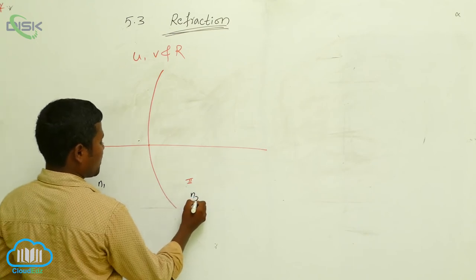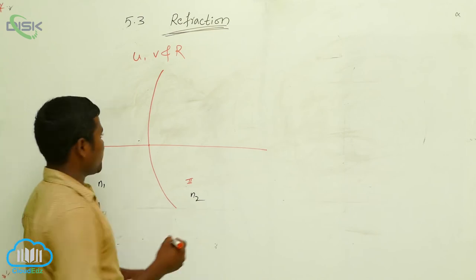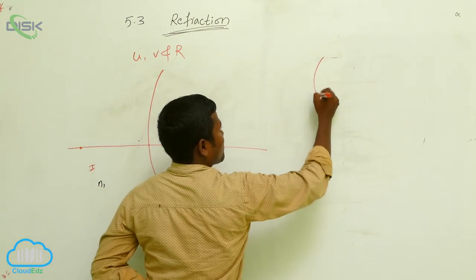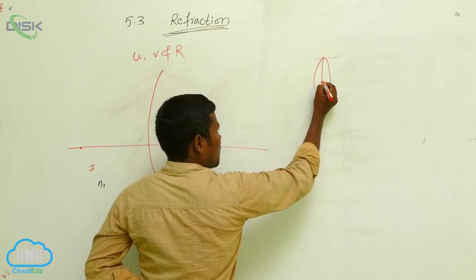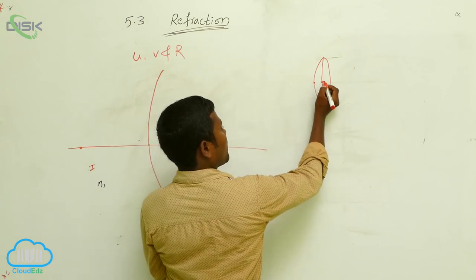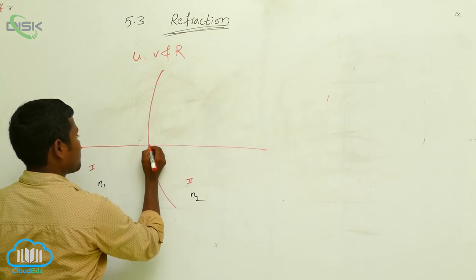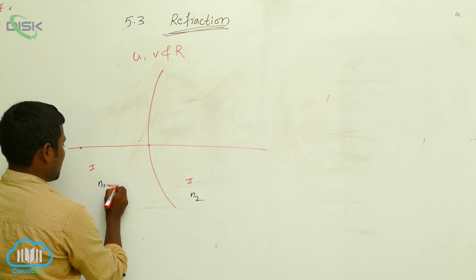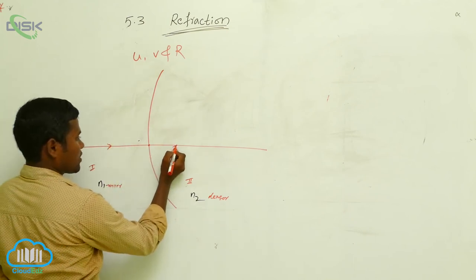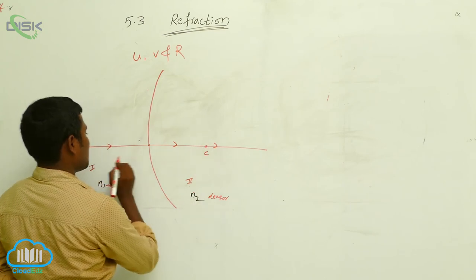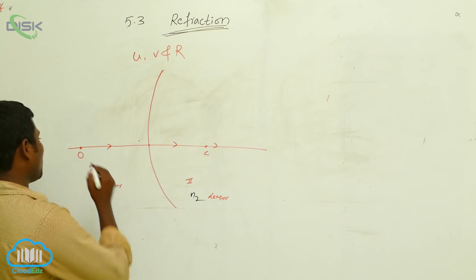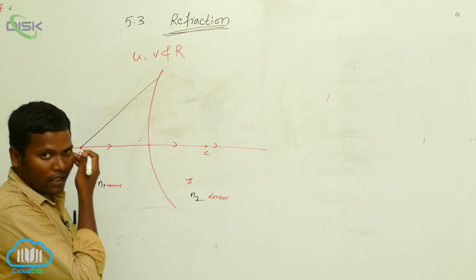Here two mediums are there — medium 1 and medium 2. This is the first medium, this is the second medium. I am taking this as the rarer medium and this as the denser medium. This I am taking as n1, this as n2. Now I am considering the principal axis. Let us take this is a lens — this is the center of the lens. Here the object is at point O, so the ray started from the object and it is striking the surface at a point.